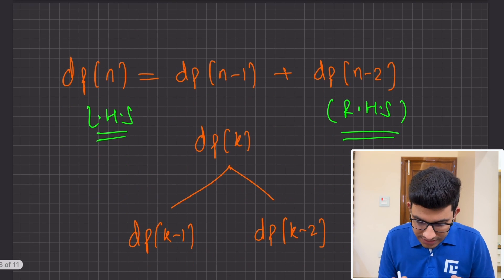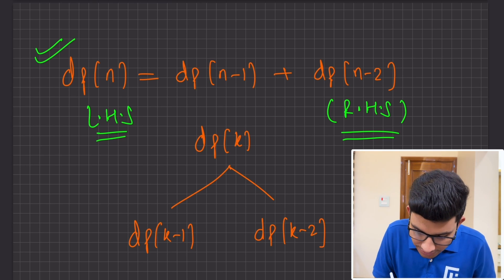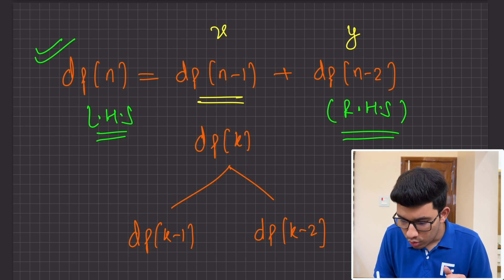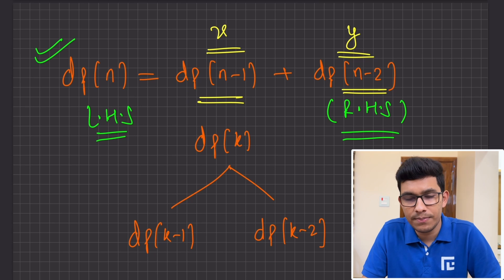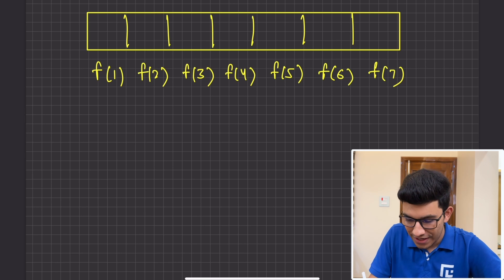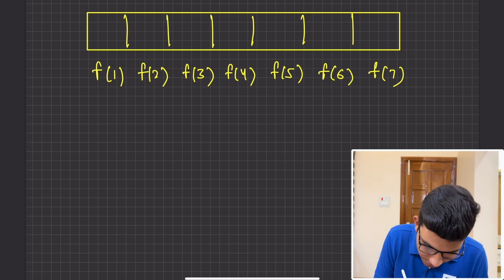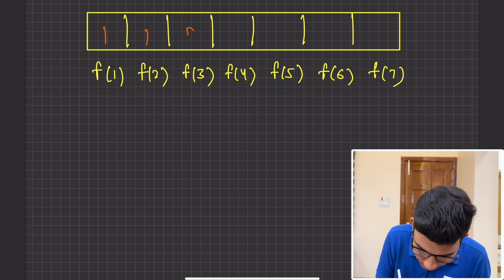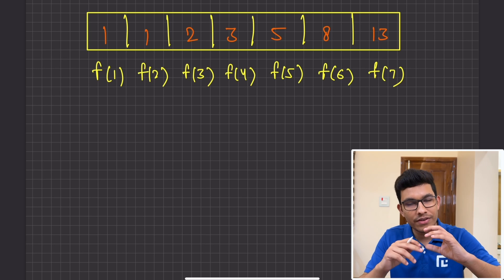For example, DP of N is equal to DP of N-1 plus DP of N-2. You already have the value for DP of N-1 and DP of N-2, so you can just add them up to get DP of N. You don't need DP of N-3 and beyond. This is how we fill the Fibonacci array incrementally: Fibonacci of 1, 2, 3, 5, 8, 13, and so on.